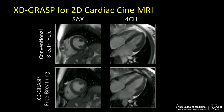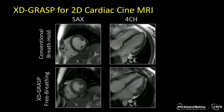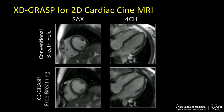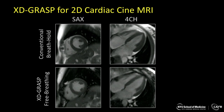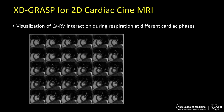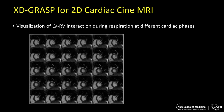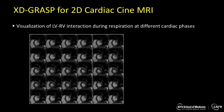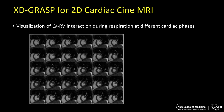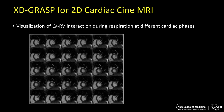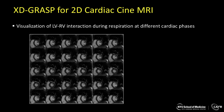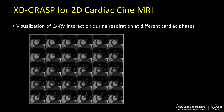This example compares the conventional breath-hold cardiac cine imaging with the XTGRASP free-breathing cardiac cine imaging. As we can see, XTGRASP can achieve similar performance when compared with the conventional approach. This example shows that in addition to conventional information, XTGRASP also provides some additional information so that we can study the movement of each cardiac phase along the respiratory motion dimension.